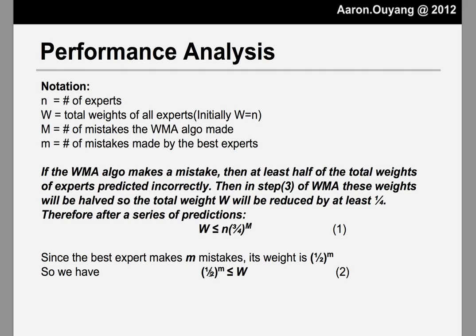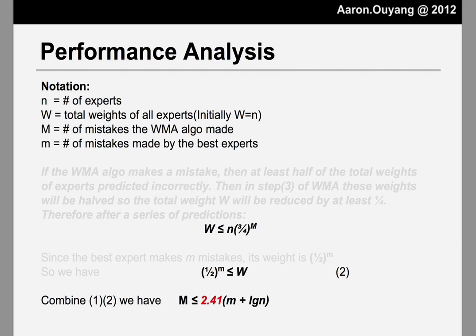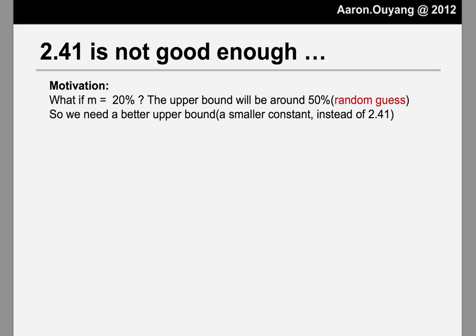By combining those two inequalities, we take the log of both sides and obtain an upper bound for M. This inequality gives an upper bound on M with respect to the best expert's mistake count. For example, if the best expert makes a 10% mistake rate, our algorithm will roughly make a 25% mistake rate. But sometimes the constant 2.41 is not good enough. If m is 20%, the upper bound becomes roughly 50%, which is almost like flipping a coin. So we actually need a better upper bound — a smaller constant instead of 2.41.